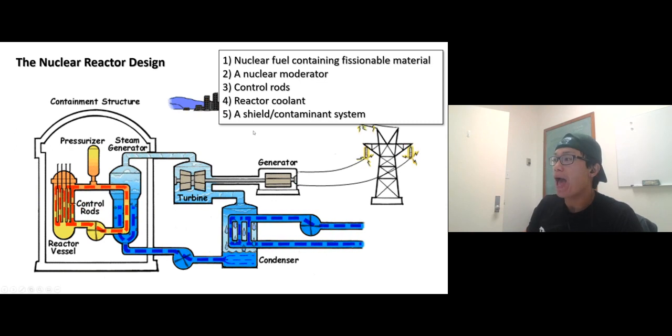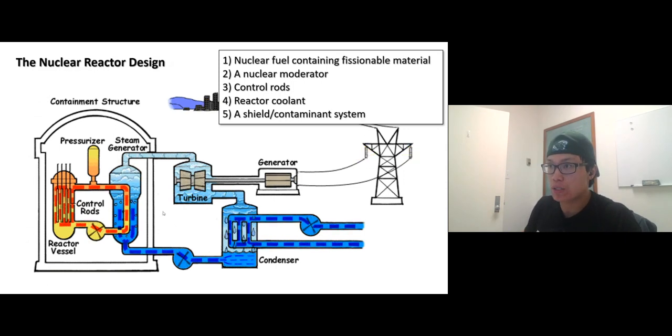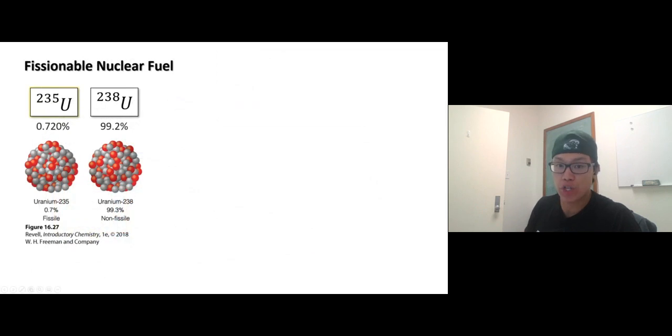And a shield containment system - the whole thing has to be shielded because this is a large amount of radioactive material, so you have to contain it. First off, we're going to talk about the fissionable nuclear fuel.